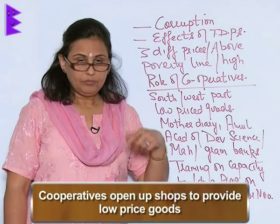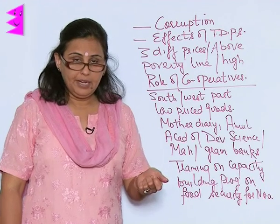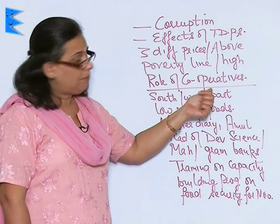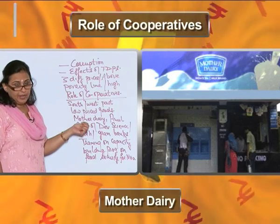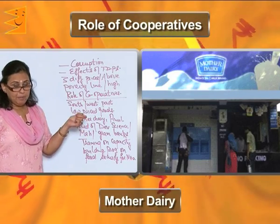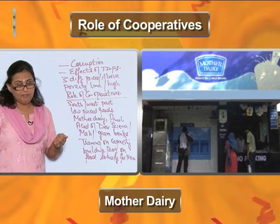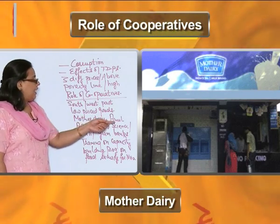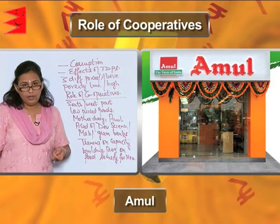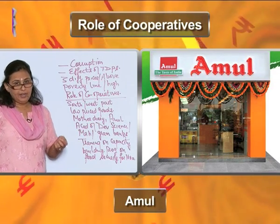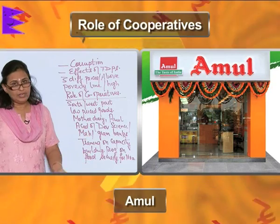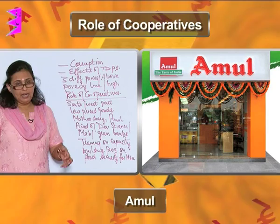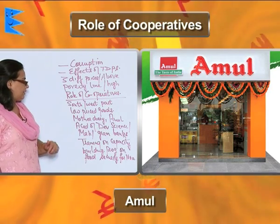Talking of Delhi, the cooperative example is that of Mother Dairy, wherein people get milk, vegetables, and fruits at a competitive price. We also see Amul in Gujarat, wherein the White Revolution has come to India — that is, a flood of milk and milk products.